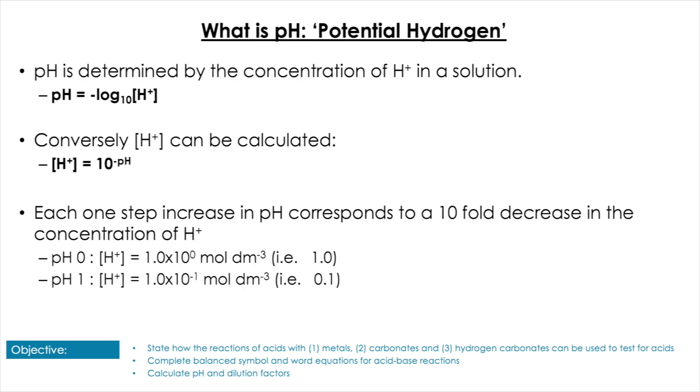So pH stands for potential hydrogen, and pH is determined by the concentration of H+ in solution, which is given by this equation: the negative log base 10 of the H+ concentration. Conversely, we can use the pH to determine H+ concentration by using 10 to the minus pH.